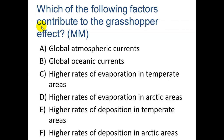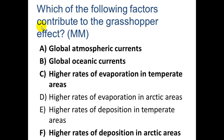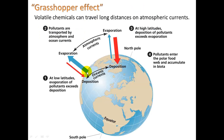How does that happen? Atmospheric and oceanic currents, higher rates of evaporation in temperate areas, and higher rates of deposition in Arctic areas. In temperate regions the chemicals evaporate into the atmosphere, get carried by atmospheric currents, and when they reach colder areas they deposit in precipitation. Because it's cold in the Arctic they're not evaporating as quickly as they're depositing, so they accumulate. Oceanic currents carry them as well.